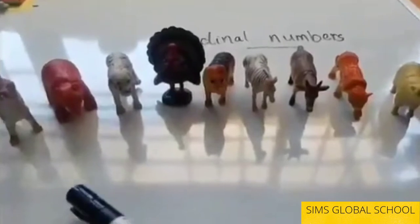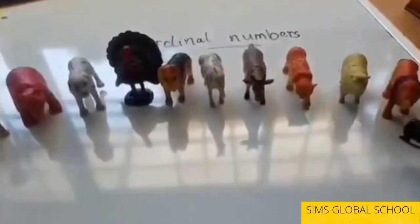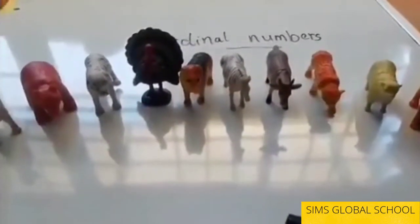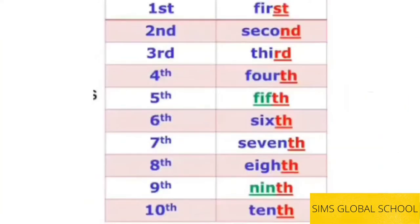We ask them to count: one, two, three, four, five, six, seven, eight, nine, ten. Once you have done this, we will ask the child to give us the ordinal number positions: first, second, third, fourth, fifth, sixth, seventh, eighth, ninth, tenth.